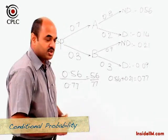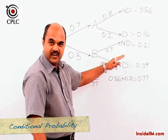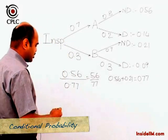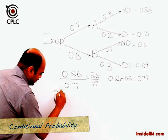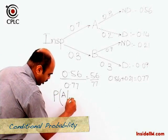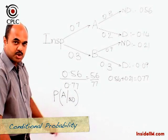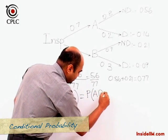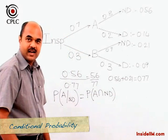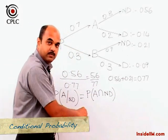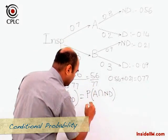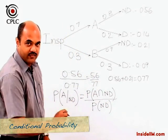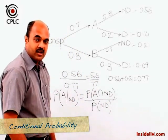So, 8/11 is the answer: given that the article is non-defective, the probability that it comes from machine A is 8/11. Another way of stating this is: probability of A given non-defective, written as P(A | non-defective). This is conditional probability, and the formula is: P(A | non-defective) = P(A ∩ non-defective) / P(non-defective). This is the formula for conditional probability.